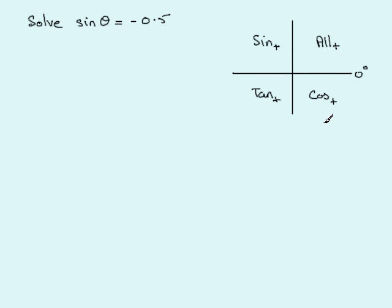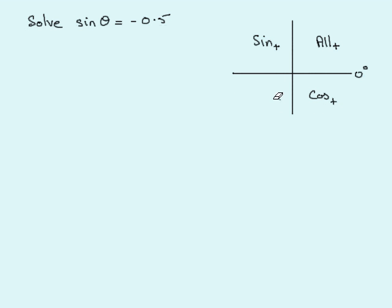We can use this quadrant diagram to help us solve the case where sine of an angle equals a negative number. So where is sine negative? Sine is negative in the third quadrant and the fourth quadrant, because sine is positive in the first and second quadrants.